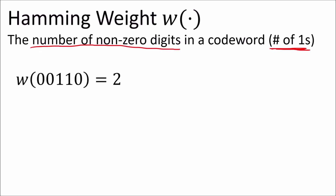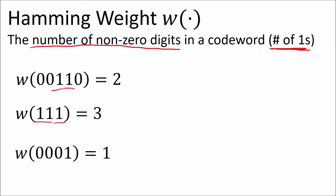So the Hamming weight of this code word is two, the weight of this code word is three, and the weight of this code word is one.